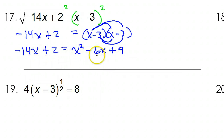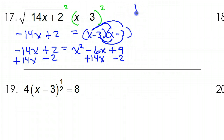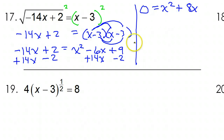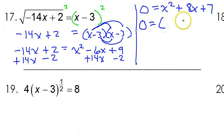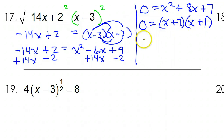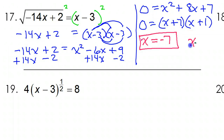I see I have x squared and x, so I need to get 0 on one side. I'm going to add 14x to both sides and subtract 2 from both sides. That will give me 0 equals x squared plus 8x plus 7. Let's try to factor this — if it doesn't factor, we'd use the quadratic formula. So that factors as (x + 7)(x + 1), giving x equals negative 7 and x equals negative 1.